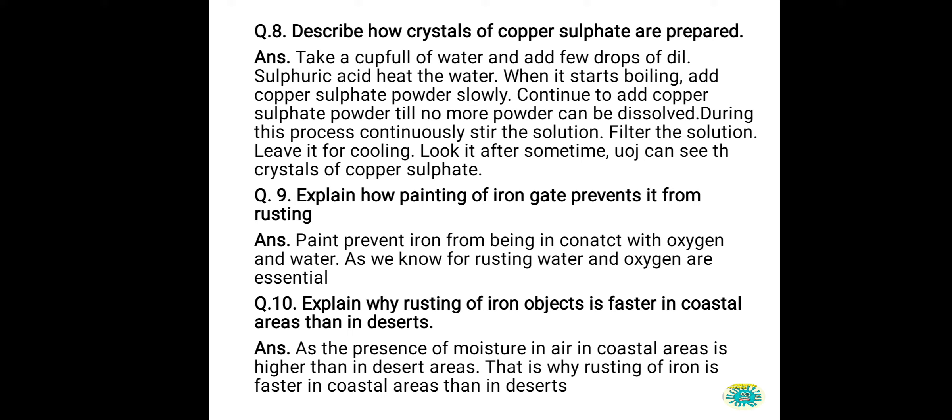Question number 9: explain how painting of an iron gate prevents it from rusting. When you paint iron, the paint creates a protective layer that prevents the iron from coming into direct contact with air or water, which are the causes of rusting. Therefore, the iron gate does not rust.